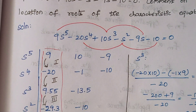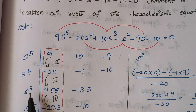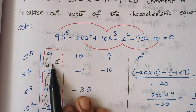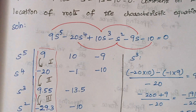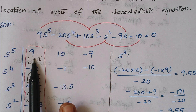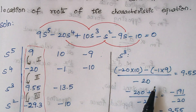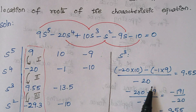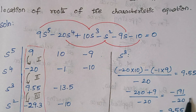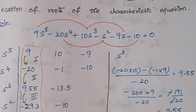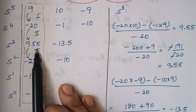Next, we find the S^3 row. The first element is: (−20 × 10 − (−1) × 9) / (−20). That gives (−200 + 9) / (−20) = (−191) / (−20). The negatives cancel, giving 9.55 as the first element of the S^3 row.